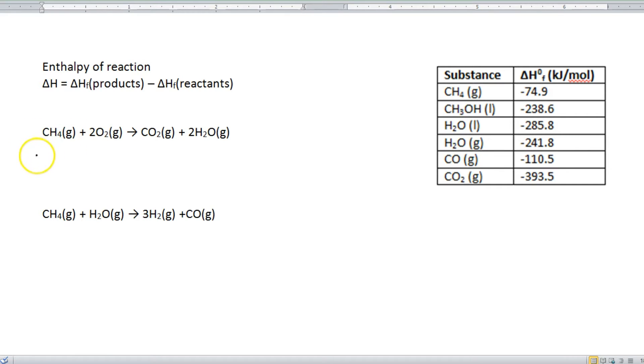Step number one. Calculate the delta H of your reactants. So all we're going to do is just add them up. Alright, so our first reactant here is CH4. So we come over to our chart, and we can see that CH4 has a delta H of negative 74.9. So negative 74.9 plus 2O2. Well, that substance is not in the chart, which means that its heat of formation, or delta H, is zero.